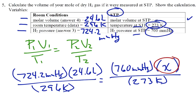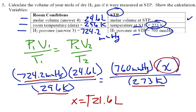Now, I've done my calculation, and what I did was 724.2 times 24.6 times 273, divided by 296 and 760. So, I'm just basically cross-multiplying. And I get a value of 21.6, 21.619, so I'm going to leave it 21.6 liters. So, for me, that is the volume of my gas if I were at STP.